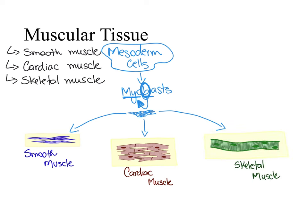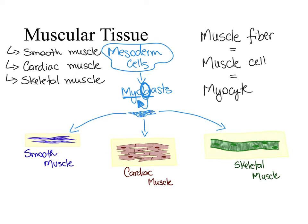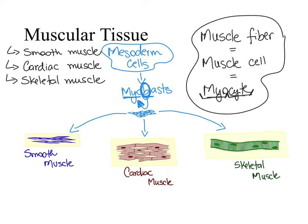One thing smooth muscle, cardiac muscle, and skeletal muscle have in common in their appearance is that the muscle cells are long — elongated. They are elongated in smooth and cardiac muscle, and extremely long in skeletal muscle. Since these cells are long, they look like fibers, and that is the reason we say 'muscle fiber.' Every time you hear muscle fiber, muscle cell, or myocyte — 'myo' meaning muscle and 'cyte' meaning cell — we are referring to the same thing. They are all synonyms.